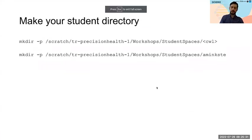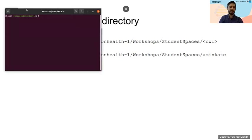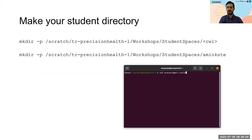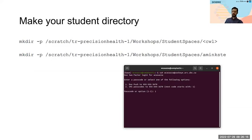We're going to open up Sockeye and make sure you've already created your own working directory on the precision health allocation. To log in, run a command like: ssh your-username@cwl.arc.sockeye.ubc.ca. It'll ask for two-factor authentication — hopefully you have that set up. Mine is an app on my phone. Once you log in, you'll get this beautiful ASCII art of a fish.